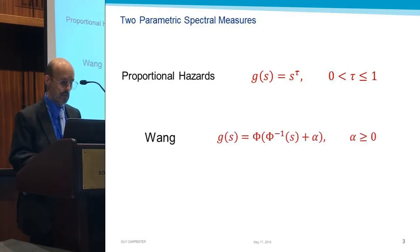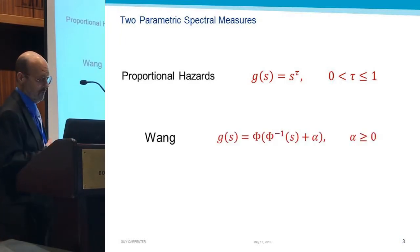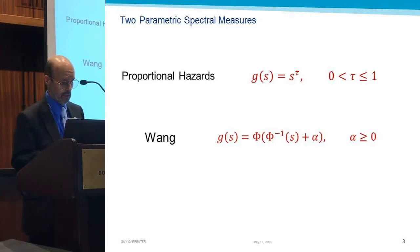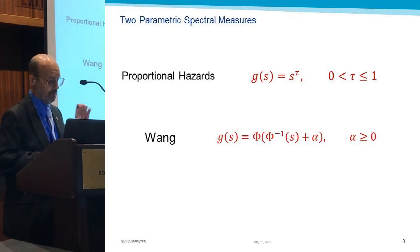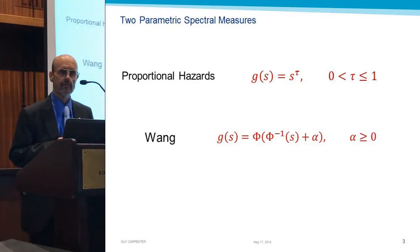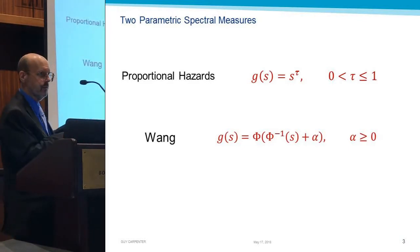Now the other famous one is the Wang transform. And this is a little more complicated here. We're building from the inside out. So the input to the function is s, our exceedance probability. And the first thing we're going to do is we're going to take the inverse normal CDF function of that. For example, if the exceedance probability was 5%, then phi inverse of that is going to be negative 1.645. So we're putting it on the normal Z scale.